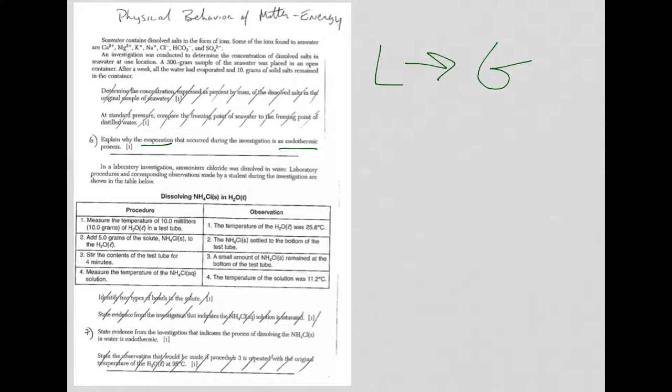Let's take a look at number 7 here. So state evidence from the investigation indicates the process of dissolving of NH4Cl is endothermic. Well, in 2015, they really liked the word endothermic. Again, endothermic means the energy is going in. And where's the evidence here that it's going in? Well, let's take a look. The temperature of just water by itself was 25.8 degrees Celsius. You added the ammonium chloride, and sure enough, it was stirred, we waited, and look what happened. The temperature went down. So the temperature of the water in the solution dropped. That shows you that it's an endothermic process.